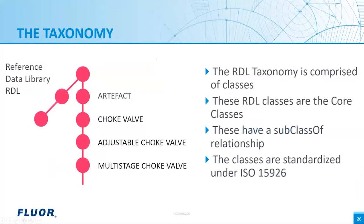The taxonomy is comprised of classes — a class is a type of something. In this example, an object I am designing is classified as 'choke valve.' It is called a taxonomy because the classes are connected to each other in parent-child relationships. Such a relationship is 'subclass of' — a standard semantic web relationship. In this example you can see four classes: 'artifact' is a superclass of 'choke valve,' its child is 'adjustable choke valve,' and then 'multi-stage choke valve.' The classes are standardized — they cannot be changed, which is what we require for a neutral language. But if you need a class on your project that doesn't exist in the standard, you can make your own reference data library taxonomy. Let's go online to check out this taxonomy.